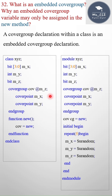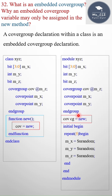This is called an embedded cover group because the cover group is defined inside the class. When it comes to the construction of an embedded cover group, here I have created the cover group inside the new method. This is a normal cover group where the instance is created with `covcj = new`, and inside the class the cover group is created with the cover group name, so `cov = new`, within the new method.